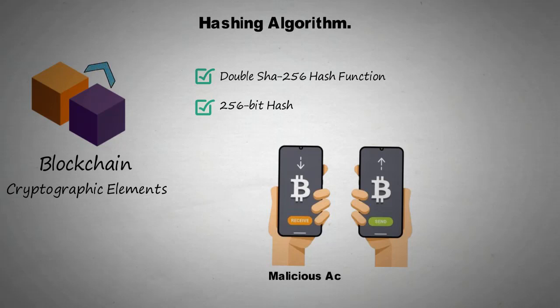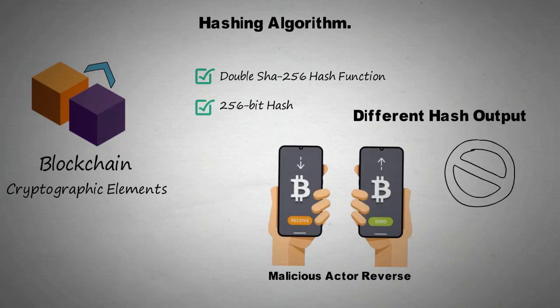Each block in a chain contains a specific set of data from the previous block. Therefore, even if a malicious actor reverse-engineers the hash, the resultant block would be out of sync with the rest of the blocks since it will have a different hash output, thus causing the system to reject it.